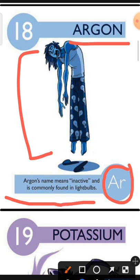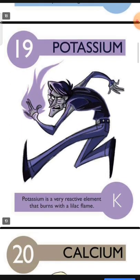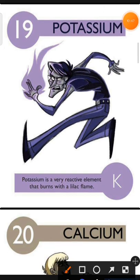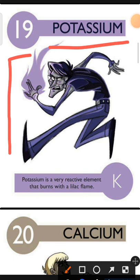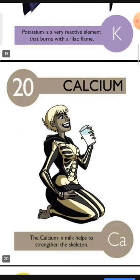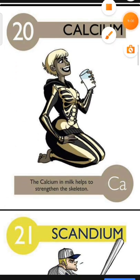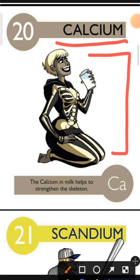Element number 19 is Potassium. The characteristic of Potassium is: Potassium is a very reactive element that burns with a lilac flame. Element number 20 is Calcium. The characteristic of Calcium is: the calcium in milk helps to strengthen the skeleton.